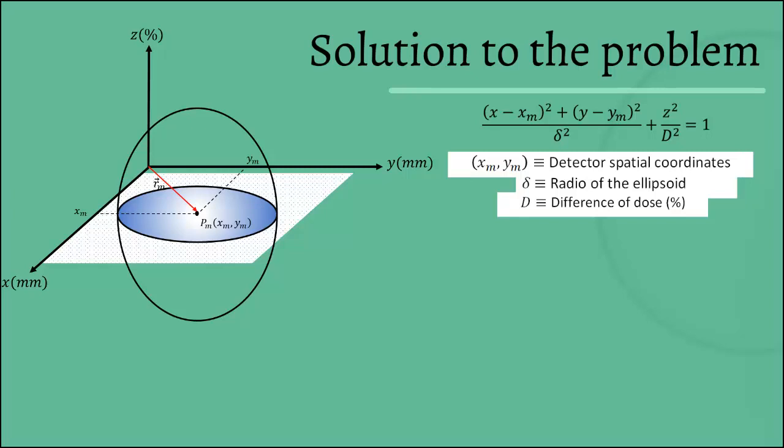And there's two characters, delta and D. Delta is the ratio value of the circumference generated on the plane XY. And D is a difference of dose in percentage.